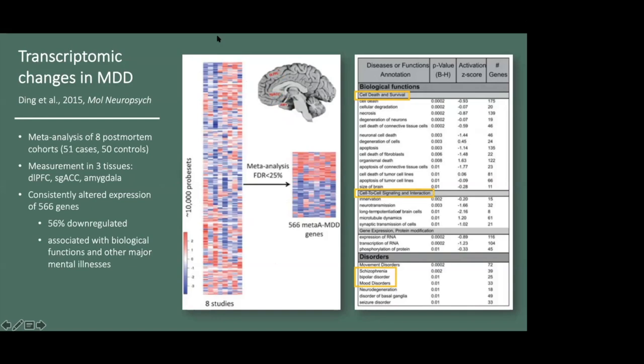As you can see on the right, pathway analysis revealed significant associations with biological functions related to cell death and survival and cell-to-cell signaling, and with other major mental illnesses and brain disorders. It's also worth noting that there was significant overlap with genes near GWAS hits for neuropsychiatric disorders and aging.